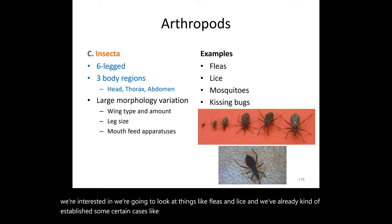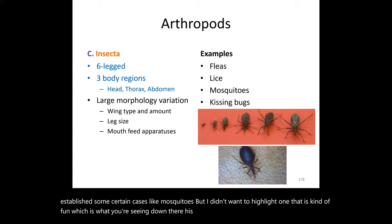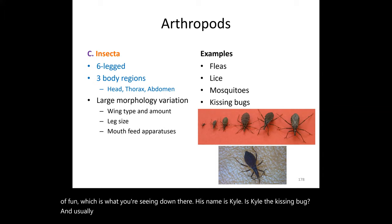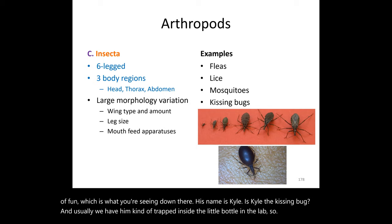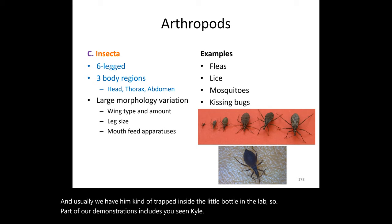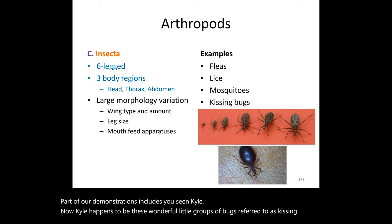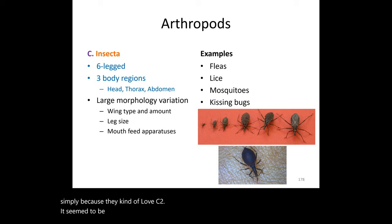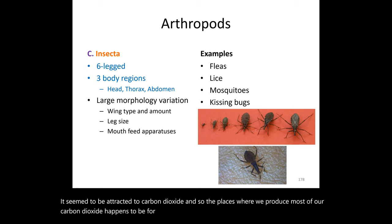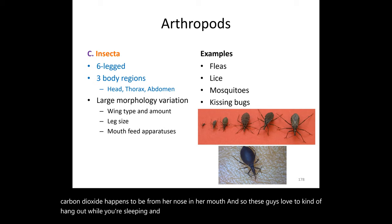Among the insect vectors we're interested in are fleas, lice, and mosquitoes, but I want to highlight one that's particularly interesting — the kissing bug. We actually have one named Kyle trapped in a bottle in the lab for demonstrations. Kissing bugs are attracted to carbon dioxide, and since we produce most CO2 from our nose and mouth, they tend to hover near those areas while you sleep.